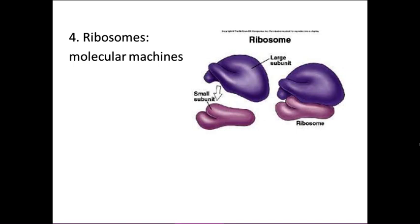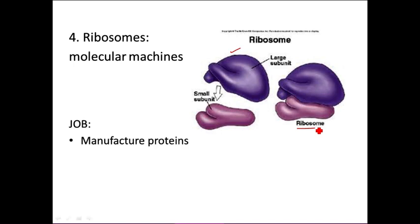Ribosomes are little molecular machines found in all cells, both prokaryotic and eukaryotic. They have two component parts that come together to form the ribosome. What is important is that their job is to manufacture proteins. Proteins are an extremely important type of macromolecule that do all of the work inside cells — we'll talk about their structure later this quarter. Without ribosomes, we wouldn't have proteins and cells wouldn't be able to do work.